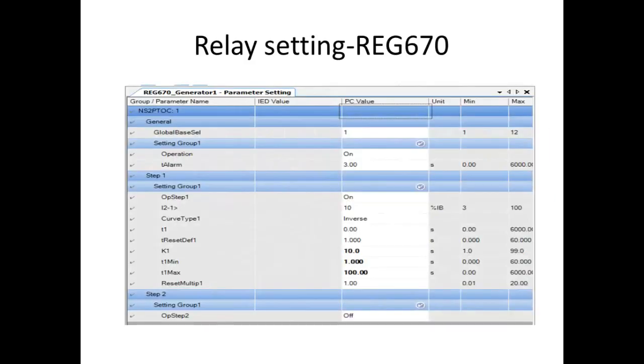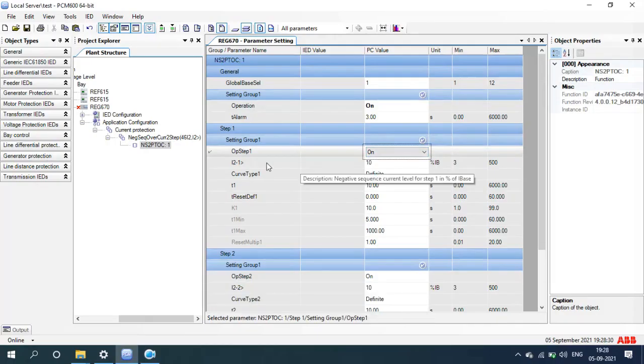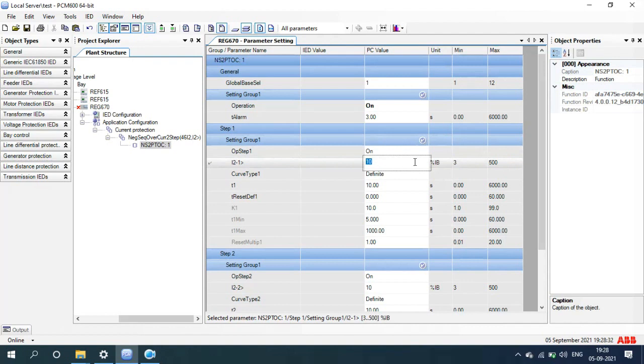Now we will see REG670 relay settings and how we use this negative phase sequence protection. In this relay, we will use two types: Definite Time and Curve Basis. You can use Definite Time with two settings: T1 Time and I2 Current Settings, that is negative phase sequence current settings. But if you use curve, we will use the constant value T minimum and T maximum.